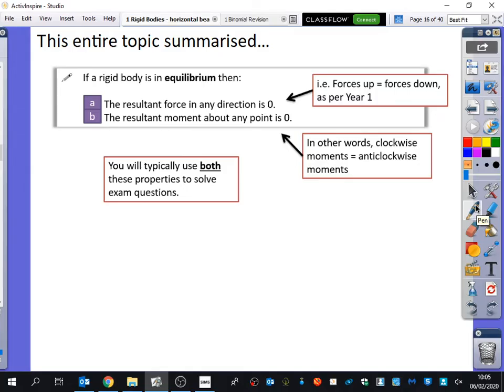We are going to be looking at rigid bodies that are in equilibrium. Now, if they are in equilibrium, then the resultant force in any direction is zero. In other words, forces up equal forces down. So all you can do is resolve the forces. That's one of the two things that you can do. One of the two things you can do is resolve the forces.